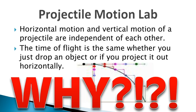Gravity is the common denominator here. Because there are no horizontal forces, we have constant velocity horizontally. We have acceleration or unbalanced forces pulling down on the object — the projectile. All objects in gravity wells are going to accelerate at the exact same rate: 9.8 m/s² on Earth, about 1.6 m/s² on the Moon.